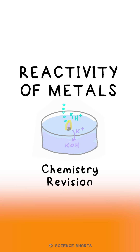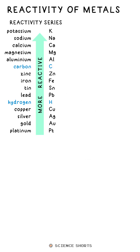Here's the reactivity series for the most common metals we consider. You can see that hydrogen and carbon have also snuck in there. That's because it's often necessary to compare the reactivity of metals to those in order to predict what will happen in a reaction.